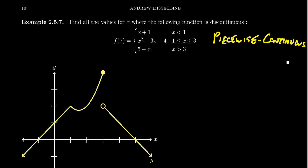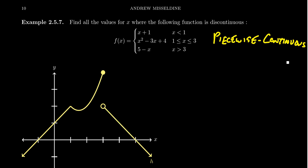Likewise, if you look at the parabola x squared minus 3x plus 4, everywhere on the interior of that interval you're going to be continuous. And lastly, if you look at the piece y equals 5 minus x, everywhere in the interior of the piece you're going to be continuous. What you're potentially lacking is continuity at the switching numbers.